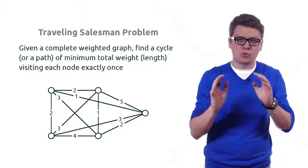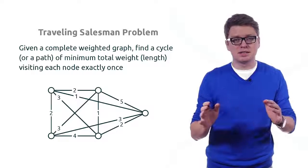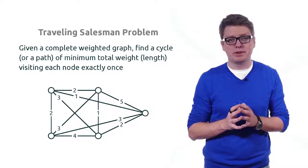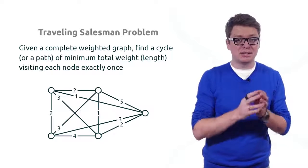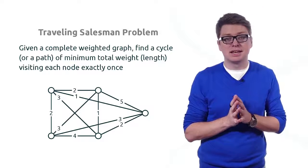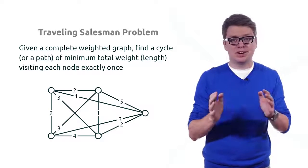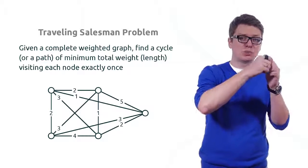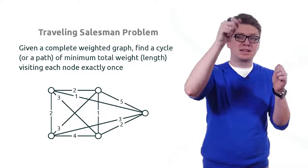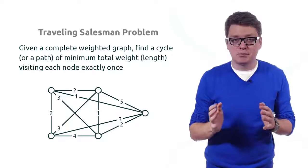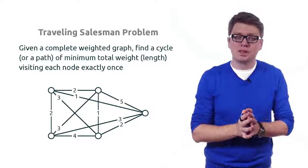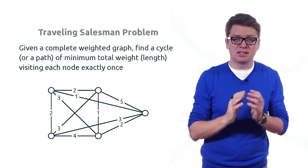Formally, the input to this problem consists of a complete weighted graph. By 'complete' I mean there is an edge between every pair of nodes, and by 'weighted' I mean there is a number on every edge — we call this a weight or length of the edge. A graph may be either directed or undirected. If undirected, there is one edge between every pair of nodes. If directed, there is an edge from a to b and an edge from b to a for every pair of nodes, and in general the weights of these two edges need not be equal.